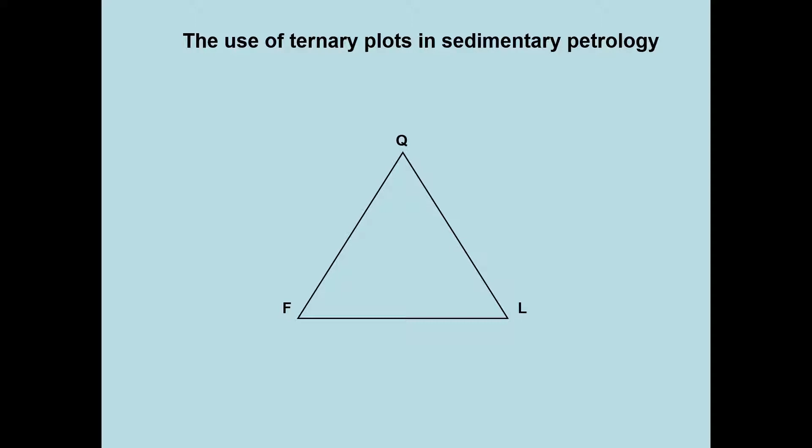They have three corners that most commonly refer to the Q, F, and L poles. Q, F, and L refer to the so-called framework grains, which as their name suggests are the most important sedimentary rock forming constituents.